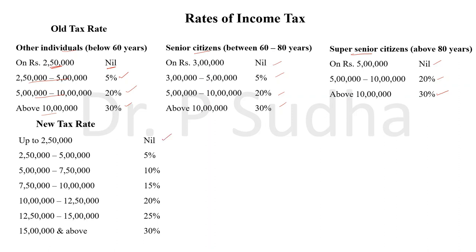Under the new tax regime: 2,50,000 to 5,00,000 he will pay 5%; 5,00,000 to 7,50,000 he will pay 10%; 7,50,000 to 10,00,000 he will pay 15%; 10,00,000 to 12,50,000 it is 20%; 12,50,000 to 15,00,000 it is 25%; and 15,00,000 and above he will pay 30%.